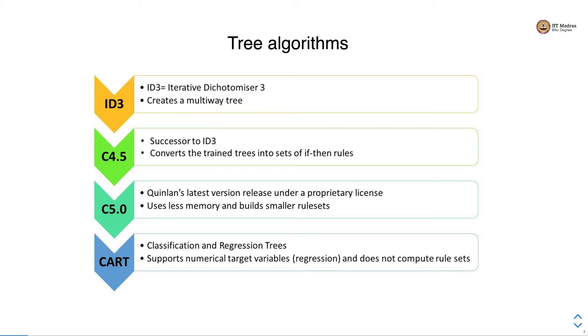The advanced version of C4.5 is called C5.0 that uses less memory and builds smaller rule sets. And then there is a CART algorithm which is classification and regression trees and it supports regression besides classification as done in the traditional tree algorithm. CART however does not compute rule sets.